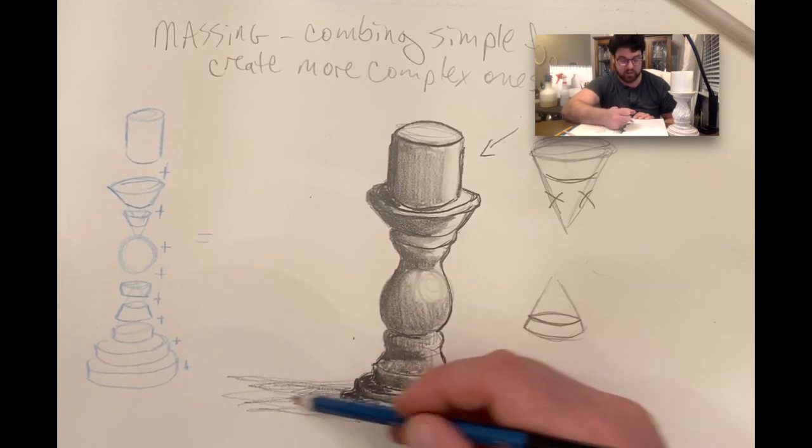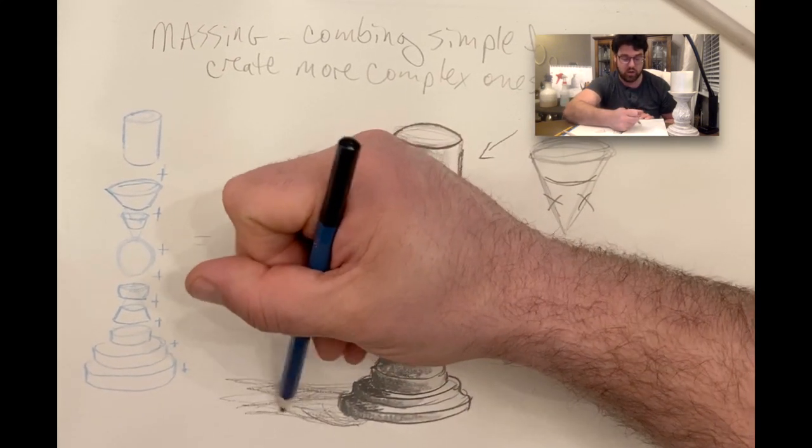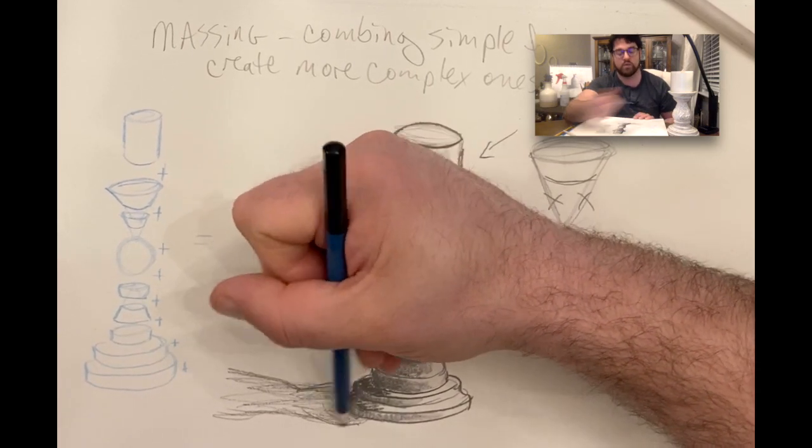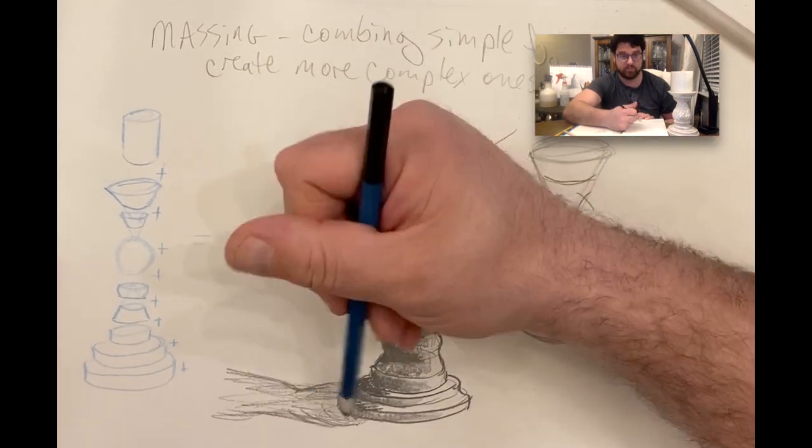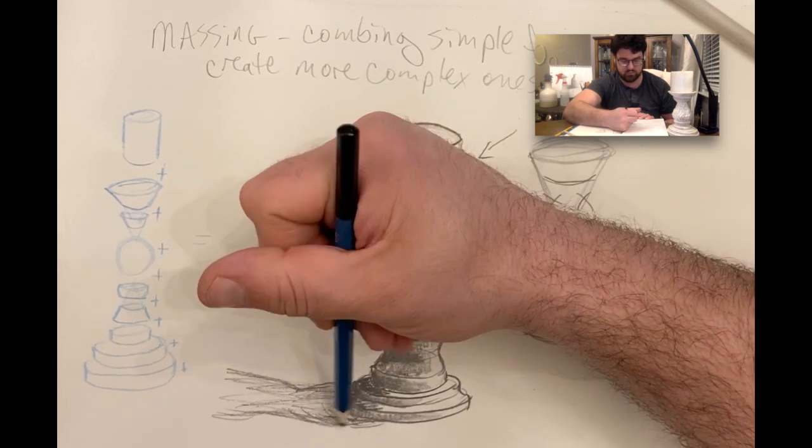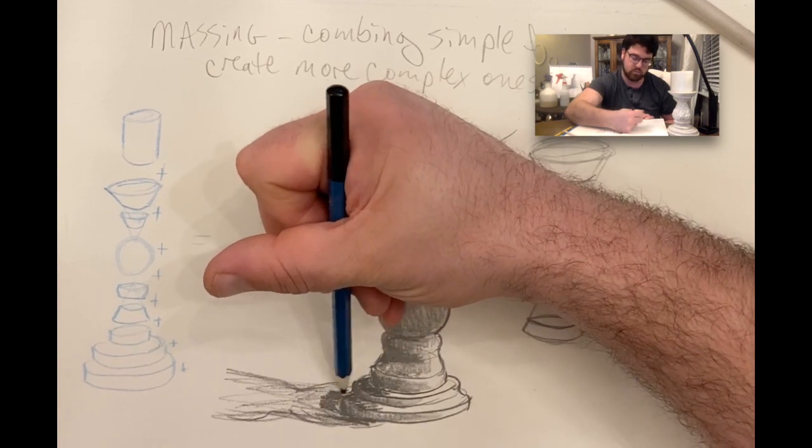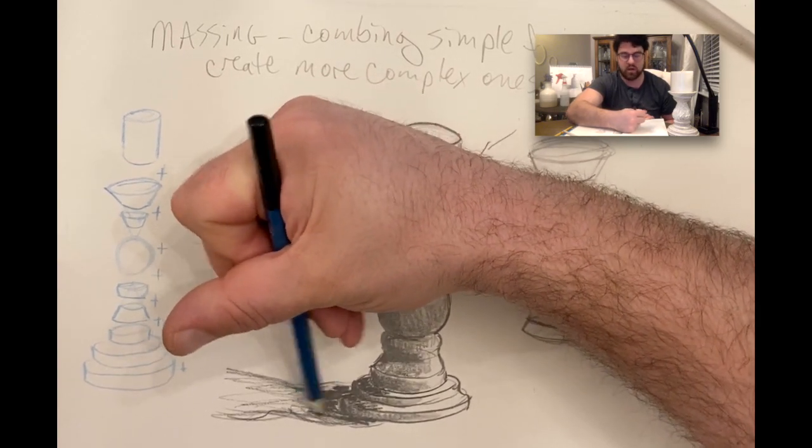Again you can kind of see it sort of starts taking the shape of the object itself. It's not just coming straight off. So I'm going to sort of mirror that, make it darkest where it meets the object, start fading it out to light.